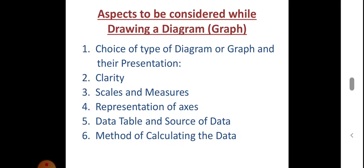The fourth point is representation of axis. It is necessary to state what is presented on both axes of a diagram or graph. Two axes are presented: the x-axis and y-axis. The independent variable is measured on the x-axis and the dependent variable is measured on the y-axis.